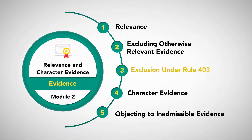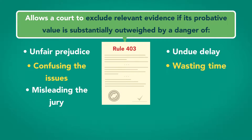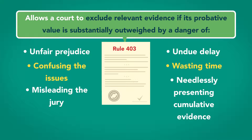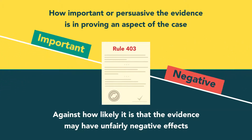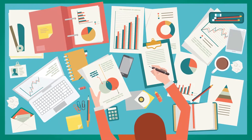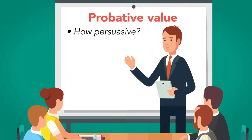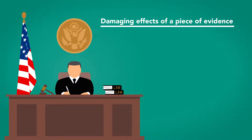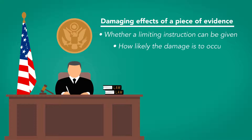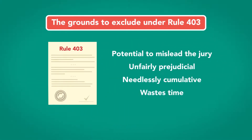Exclusion under Rule 403. Rule 403 allows a court to exclude relevant evidence if its probative value is substantially outweighed by a danger of unfair prejudice, confusing the issues, misleading the jury, undue delay, wasting time, or needlessly presenting cumulative evidence. Rule 403 imposes a balancing test, weighing how important or persuasive the evidence is in proving an aspect of the case against how likely it is that the evidence may have unfairly negative effects. The balancing test is not an exact science and requires a comprehensive examination of several factors. When determining the probative value, it's important to consider how persuasive the evidence is, how important are the facts that the evidence supports, and whether there are other methods of proving the same facts. When determining the damaging effects, a judge must consider whether a limiting instruction can be given, how likely the damage is to occur, how severe the damage would be, and how likely the damage is to affect the outcome of the case.